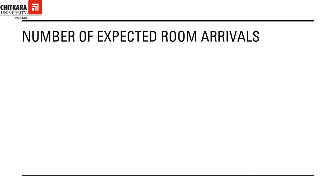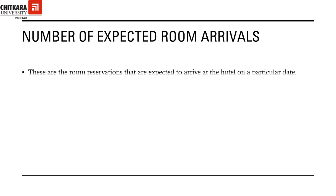The number of rooms expected to arrive on that particular day for which we are calculating the room positioning is simply the number of reservations for that date. When we reserve a room, the number of rooms is reduced from the total number of rooms available for sale. So for forecasting purposes, we will use a negative sign for it.